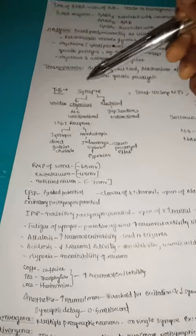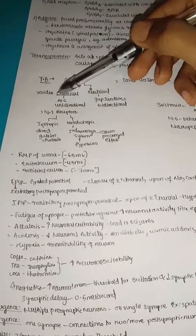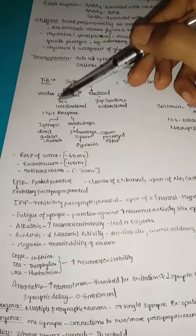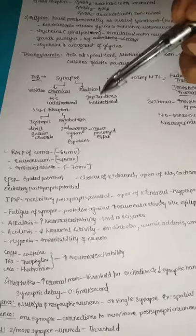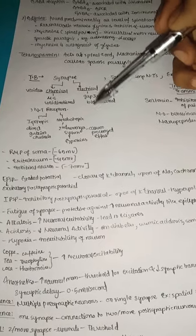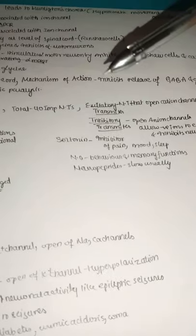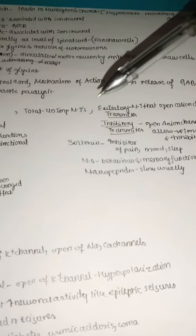In chemical synapses, vesicles are formed at the presynaptic terminal and released by exocytosis. In electrical synapses, information passes directly through gap junctions.